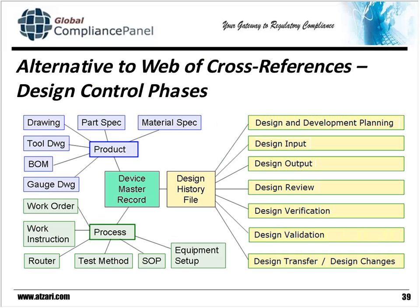Remember that web of cross-references? There is an alternative to that tangled web. On the right-hand side you can see how the different phases of design control were applied, culminating in the design history file. At the time of design transfer, we created a device master record, and we can see that product and process information are neatly kept apart, and from each one of those emanates the various types of documents that support both the product and the process. There's a way to link these together without every document pointing to every other document, so right off the bat we avoid that tangled web.